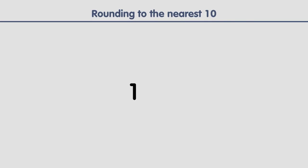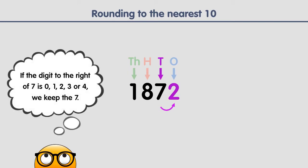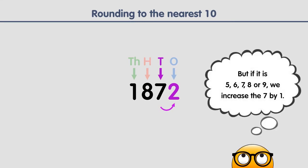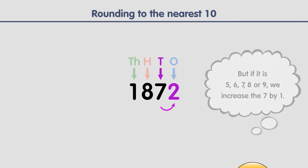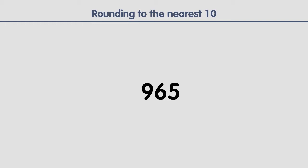To round a number to the nearest ten, the first step is to identify the digit in the tens place. Ones, tens, hundreds, and thousands — the digit in the tens place is seven. The second step is to look at the digit to the right. If that digit is less than five, we keep the seven; if it's greater than four, we increase the seven by one. In this case it's a two, so we keep the seven. The third step is to replace any digits to the right of the seven with zeros. This is the result.